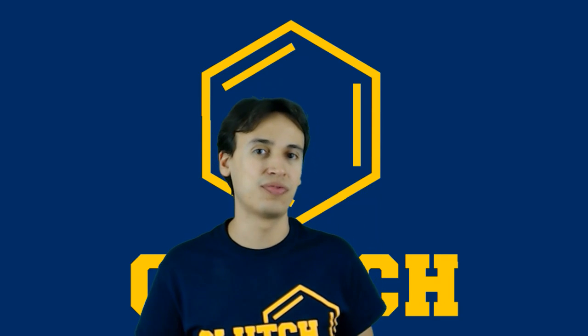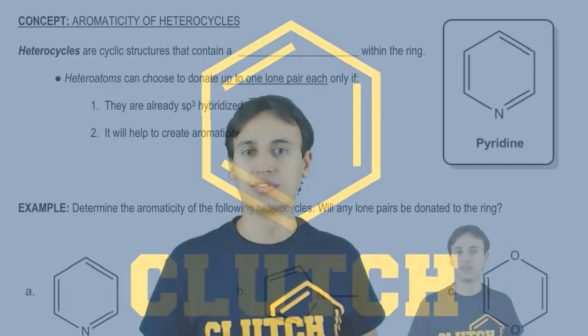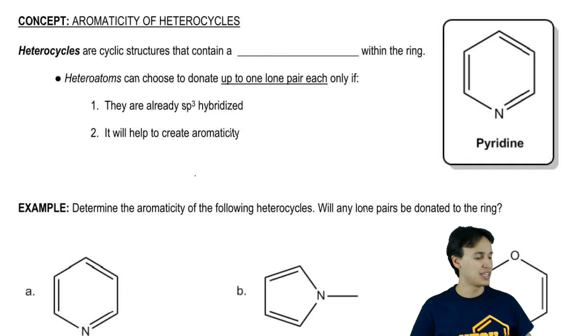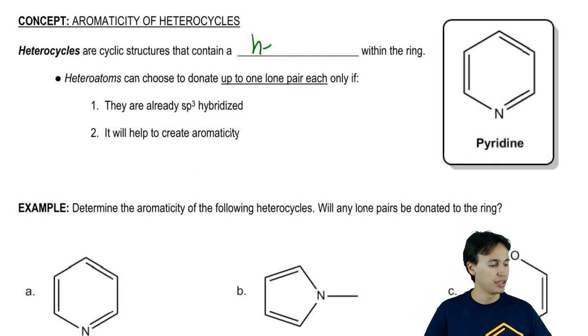There's only one more type of molecule that we need to be able to predict aromaticity for and that's heterocycles. What is a heterocycle? That's just going to be any ring that contains at least one heteroatom within it.